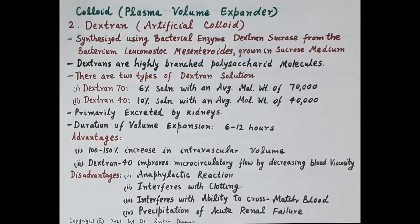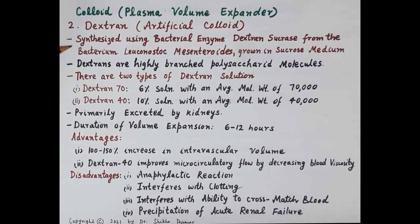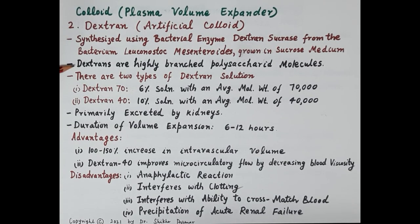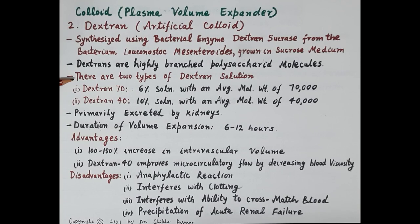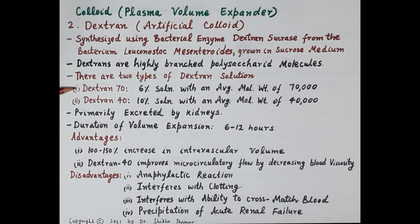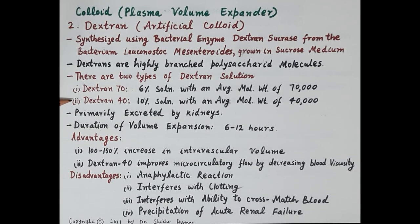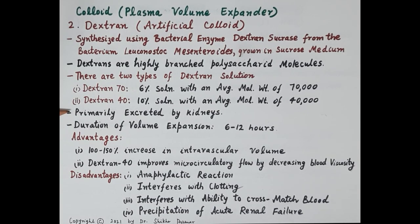Dextran is an artificial colloid synthesized using the bacterial enzyme dextransucrase from the bacterium Leuconostoc mesenteroides, which is grown in a sucrose medium. Dextrans are highly branched polysaccharide molecules. There are two types: dextran 70 is a 6 percent solution with an average molecular weight of 70,000, and dextran 40 is a 10 percent solution with an average molecular weight of 40,000. Dextran solutions are primarily excreted by the kidneys, with a duration of volume expansion of 6 to 12 hours.